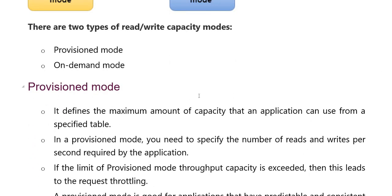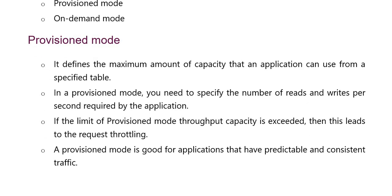Yahan pe discuss karte hain Provisioned mode. Ye define kari hain maximum amount of capacity jo application use kari hain for a specific table ke liye. Provisioned mode me specify kari hain number of reads and writes per second required by the application. Agar Provisioned mode ki throughput capacity exceed ki gai hain, then this leads to request throttling. Provisioned mode good hain applications ke liye jo predictable or consistent traffic hain.